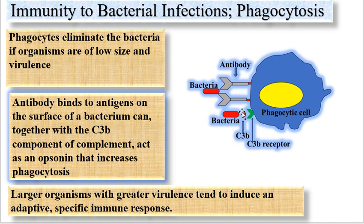In some instances, the complement component C3b will bind to the outer surface of the bacteria, and this will opsonize the bacteria to the phagocytic cell through binding to the C3b receptor. This is known as opsonization through the opsonin. However, this way of killing bacteria is not effective for larger bacteria with greater virulence.